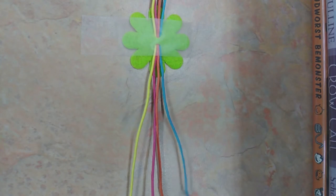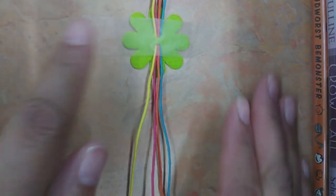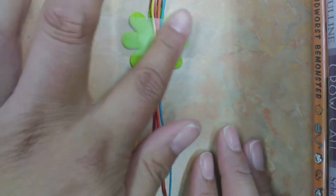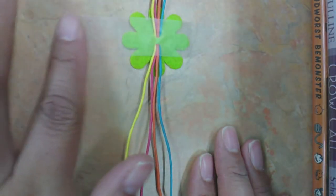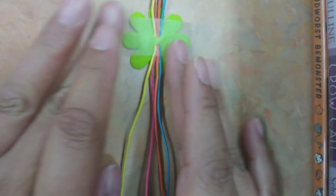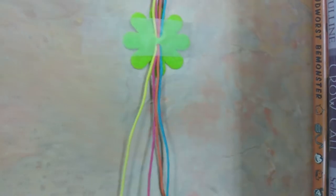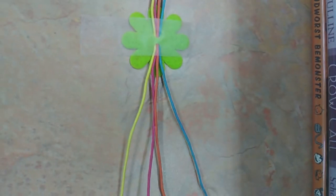Now we're ready to braid our bracelet. What you might want to do is take a little piece of scotch tape or masking tape and place it over the felt button. This will hold your bracelet in place when you're braiding it.